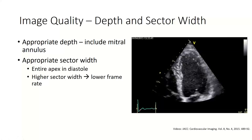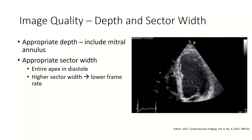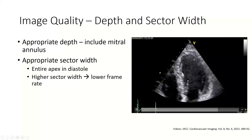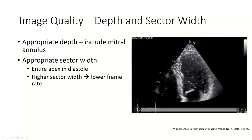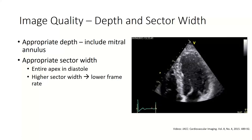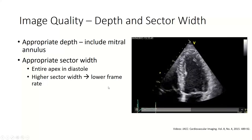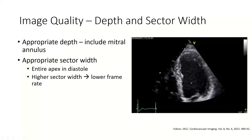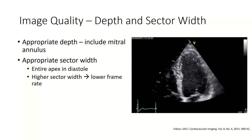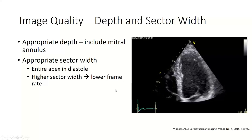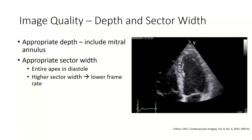Depth and sector width are important because of our need to establish a region of interest. Recall that region of interest is the green line around the compacted, non-compacted myocardium. We need enough depth to see the mitral annulus, and we need to see the entire apex in diastole to allow for appropriate tracking. However, increasing depth and sector width will drop our frame rate and influence tracking.